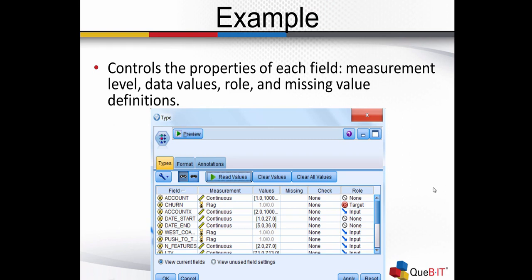This is a depiction of a type node. You can see that we have a field column which specifies the name of each one of the different fields. You can see the level of measurement and the values associated with each field. Here we can define definitions for missing data, check our data, and define the role for each one of our different variables.